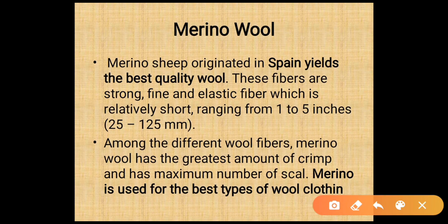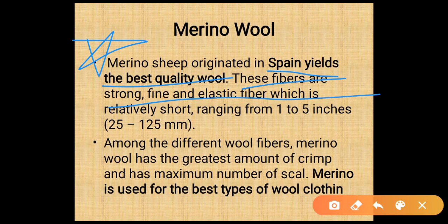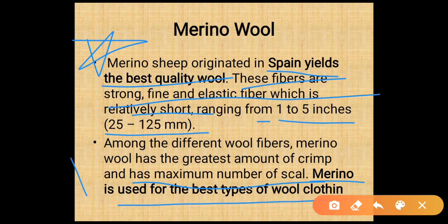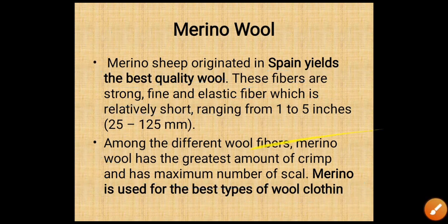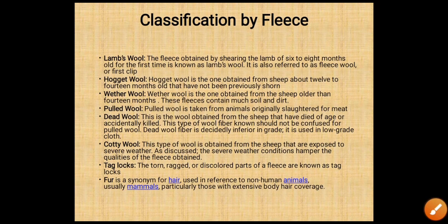Merino wool originated in Spain and yields the best quality wool. Merino fibers are strong, fine, and elastic, relatively short — ranging from about 1 to 5 inches or 25 to 125 mm. Among different wool fibers, merino wool has the greatest amount of crimp and the maximum number of scales. Merino wool is used for the best type of wool cloth.